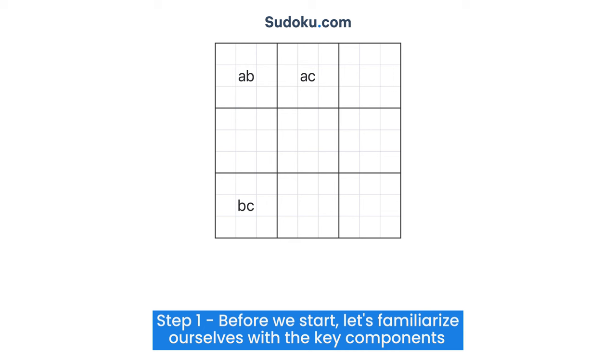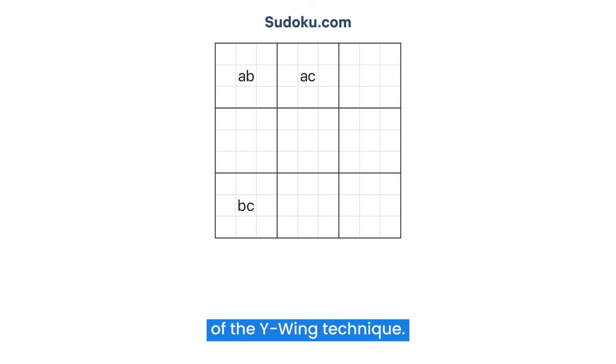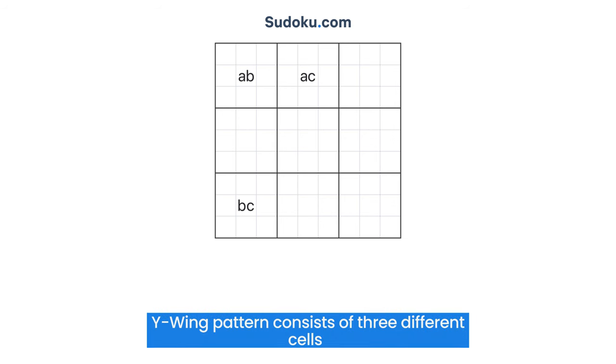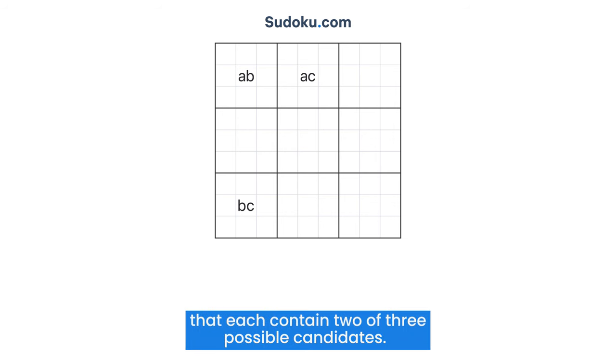Step 1: Before we start, let's familiarize ourselves with the key components of the Y-Wing Technique. The Y-Wing Pattern consists of three different cells that each contain two of three possible candidates.